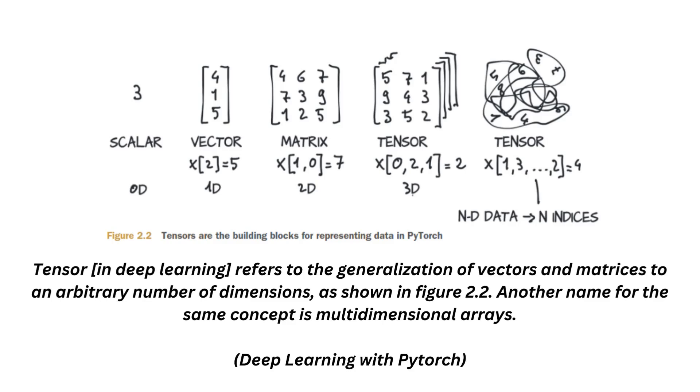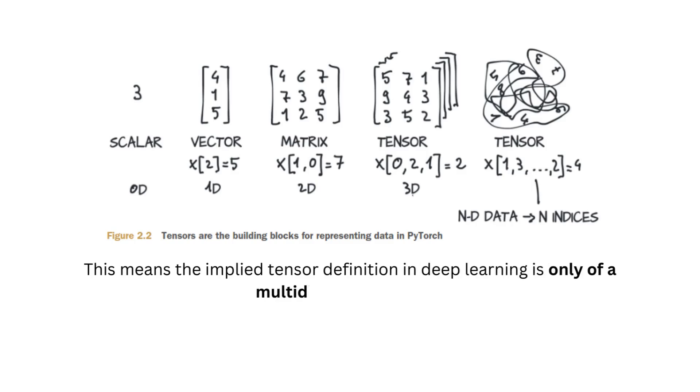This is taken from the deep learning with PyTorch book, greatly recommended. It's written by a bunch of people that built PyTorch. The implied meaning here is that the tensor in deep learning is a multi-dimensional array. There is nothing deeper or more complicated than that with tensors.